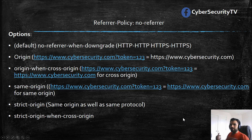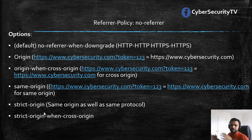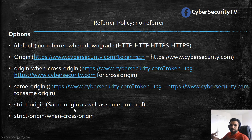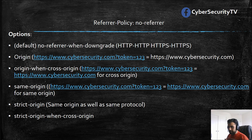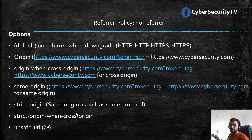Then we have strict-origin-when-cross-origin. This is the same as strict-origin but for cross-origin. So in a cross-origin scenario, if the protocol remains the same, it's going to share the origin. If the protocol differs, it's not going to share anything. For example, if the source is HTTPS and the cross-origin destination is HTTP (not HTTPS), then it's not going to share anything. And then the last one is unsafe-url — it's going to share everything without any restrictions. That name suggests it's unsafe, so you should never set it.